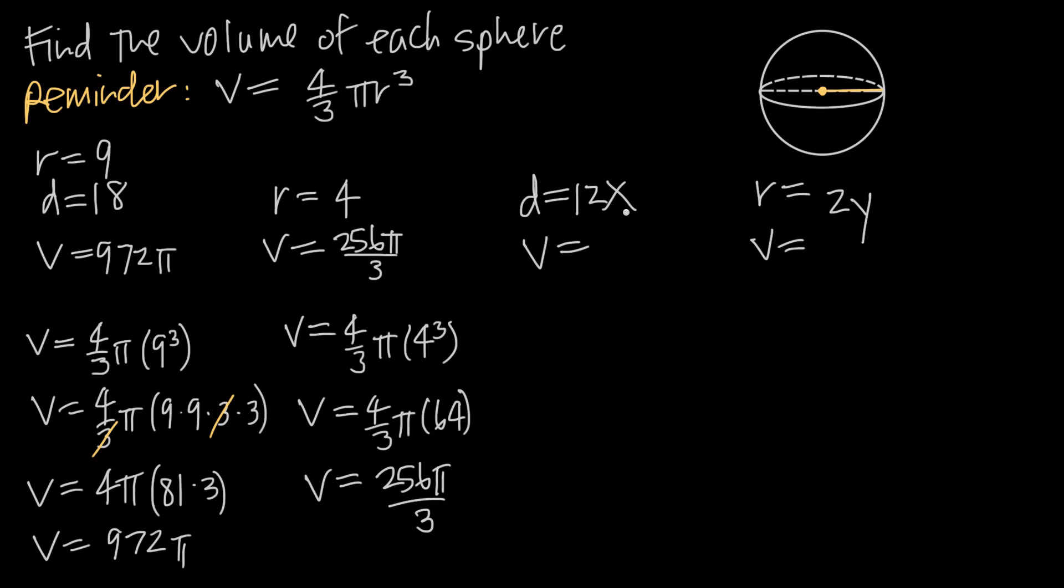Now what happens when you have a diameter like this one? Here we had diameter of 18. Here we have a diameter of 12x, so there's a variable in our diameter. Well, it's not really any different. We just need the radius. We know that the radius is going to be half of the diameter. So if we take this diameter and divide it by 2, 12x divided by 2 is just 6x. So the radius then would be 6x,